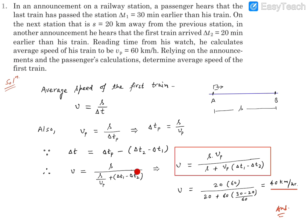After simplification, this becomes the expression for the average speed of the first train, which is V equals S Vp divided by S plus Vp within bracket Delta T1 minus Delta T2.